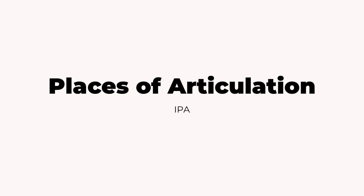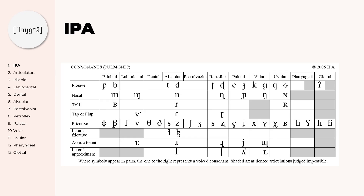Today we will talk about the places of articulation in the IPA. Specifically, this is about the places of articulation for the pulmonic consonants. In the top row we can see the places of articulation, like for example bilabial, labiodental, and so on. And these are what we will talk about today.